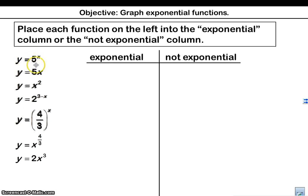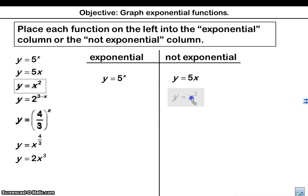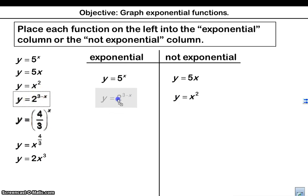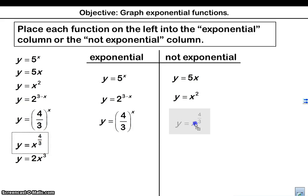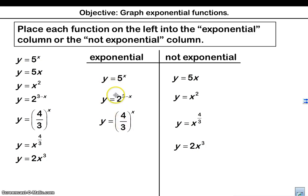An exponential function needs to have a base of a number and the power that has an x in it. Y equals five to the x — that is exponential. Y equals five x — the x isn't in the power, so this is not exponential. X squared — the two is in the power, but the x is down here; the x has to be in the power, so that is not exponential. Two to the three minus x — there's a three minus x in the power, and we've got a base, so yes, that is exponential. Y equals four thirds to the x — that is exponential. Anything that has a number in the base and a variable in the power is going to be exponential.